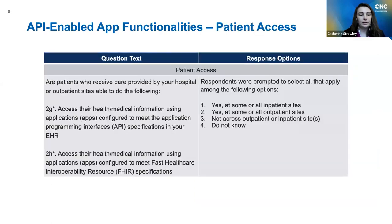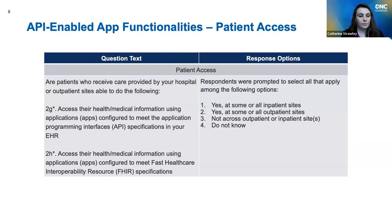Next, we have patient access functionalities. The overarching survey question is: are patients who received care provided by your hospital or outpatient sites able to do the following? Either access their information using apps configured to meet API specifications in your EHR, or access their information using apps configured to meet FHIR specifications. The response options are: yes at some or all inpatient sites, yes at some or all outpatient sites, no, and do not know. If a hospital indicated yes to either inpatient or outpatient sites for either sub-question, they were considered to have enabled patient access.